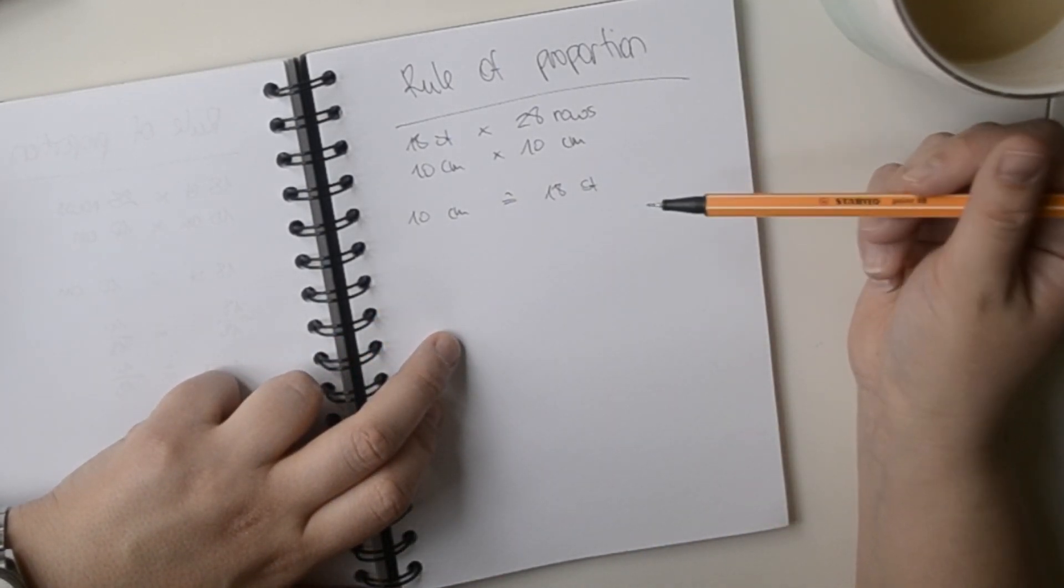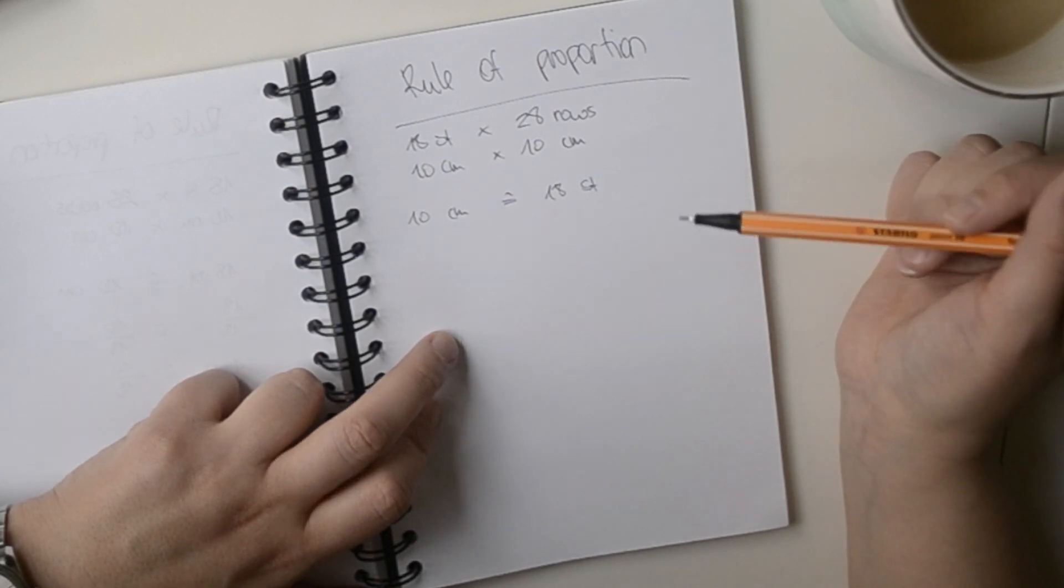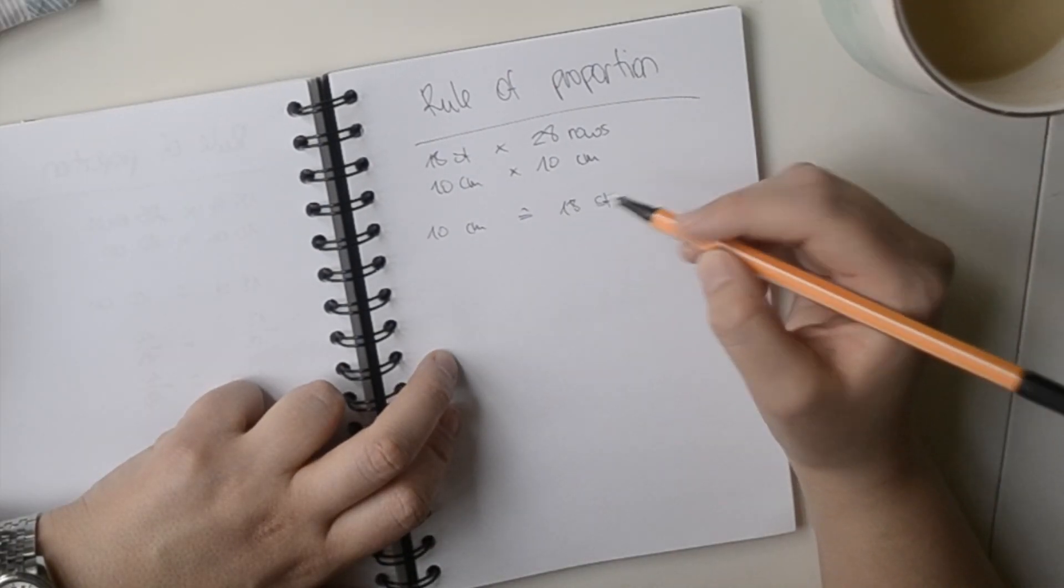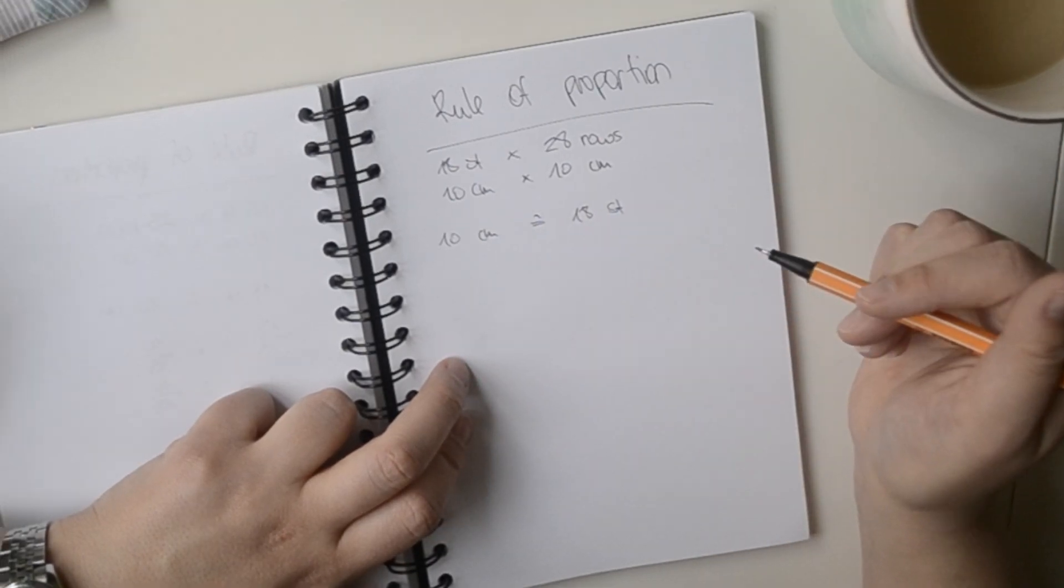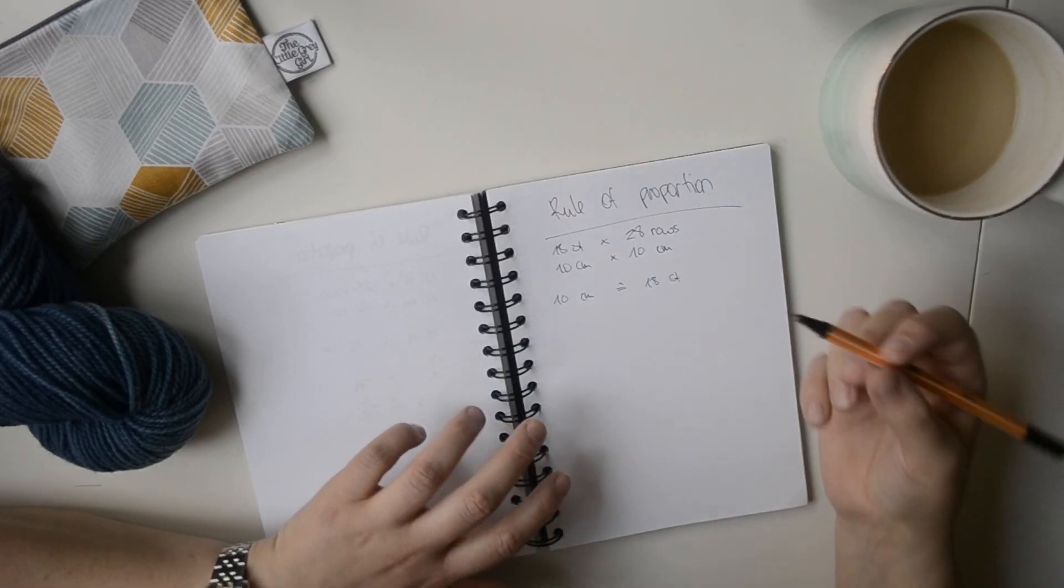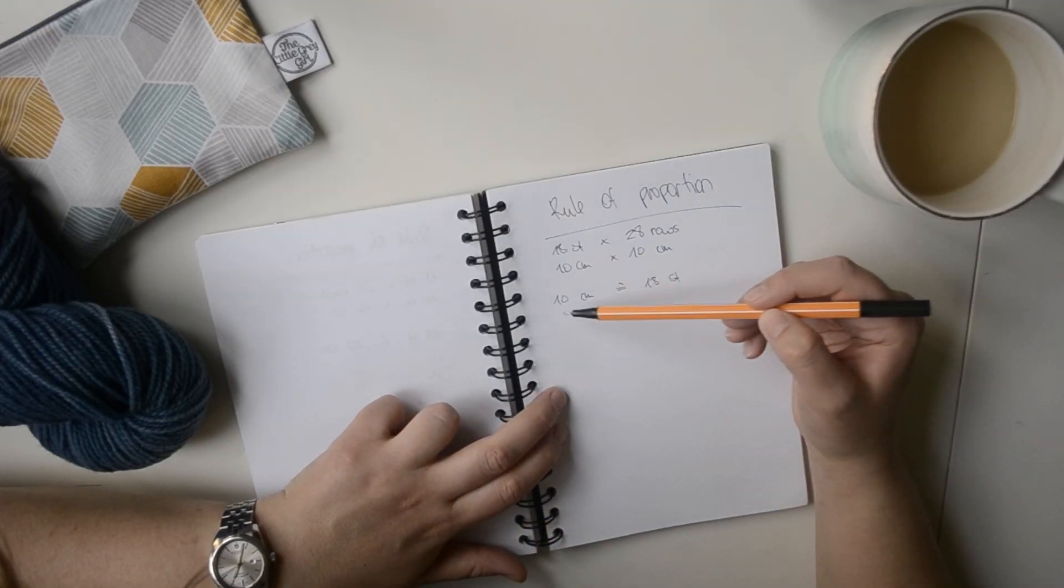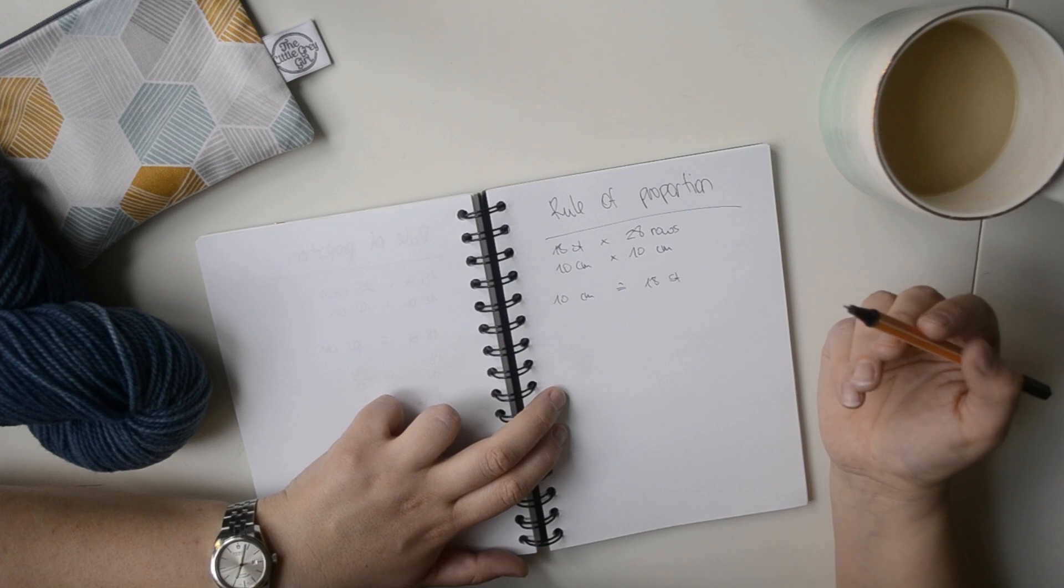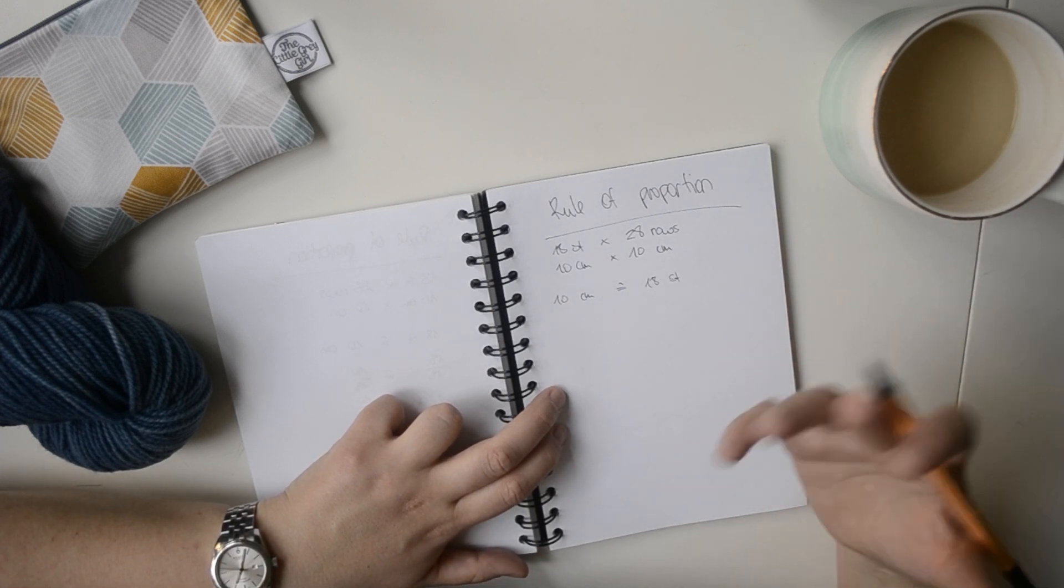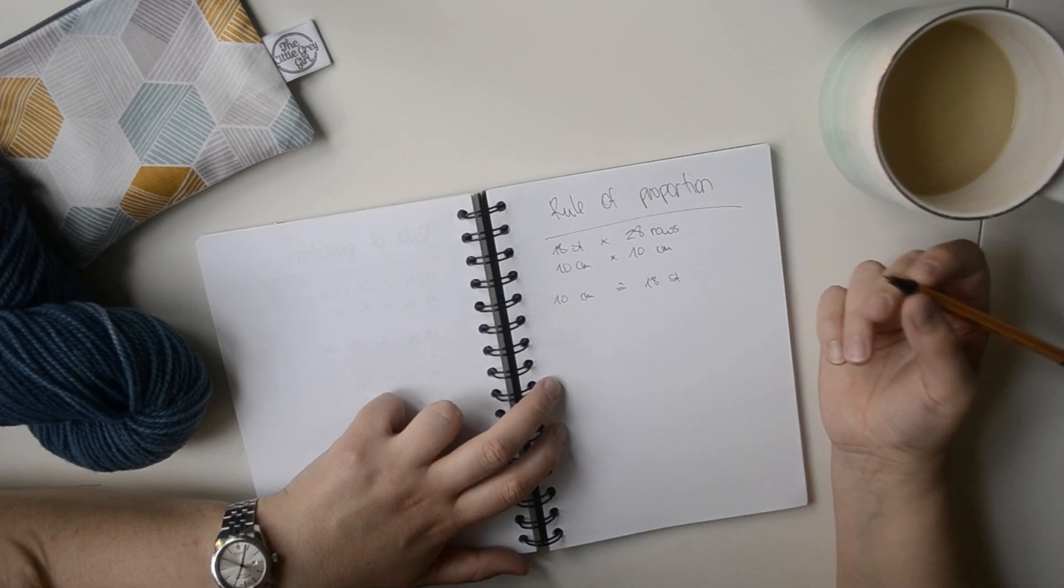So an important thing to know about the calculations and the rule of proportion is that when you do one calculation to one side on the equation, you have to do the same calculation to the other side. So the next step is that you always calculate down to one on one of the sides, as that's an easy calculation. Everything, every number divided by its own is 1.